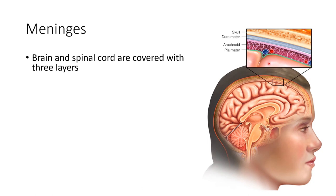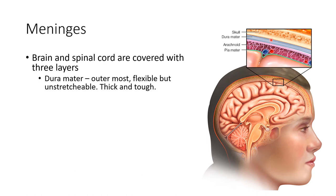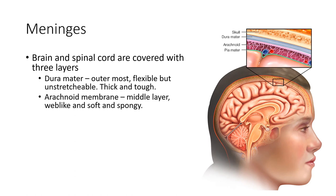Between the brain and the skull we have three different layers — the layers of the meninges. The outermost, right next to your skull, is called the dura mater. It's the outermost and toughest layer, somewhat flexible but not stretchable — thick and tough. Next, you have the arachnoid space or arachnoid mater, which is more spongy and web-like. You can see that here — it kind of looks like a sponge.